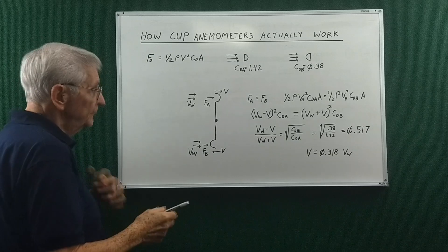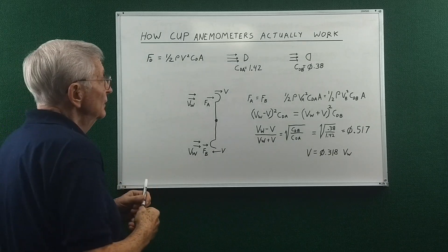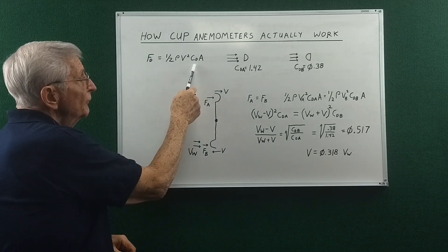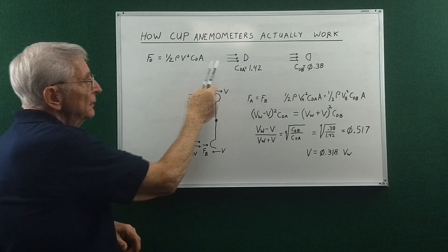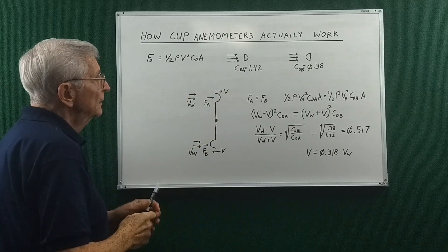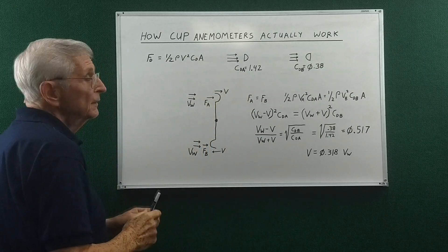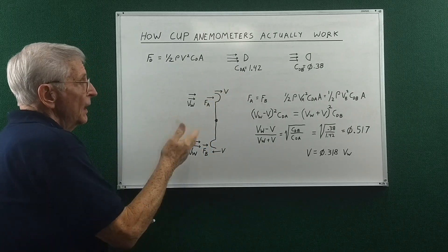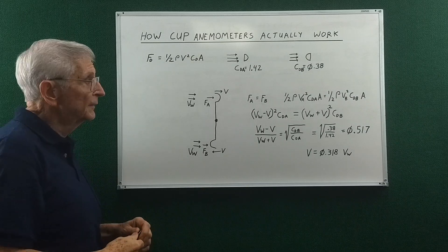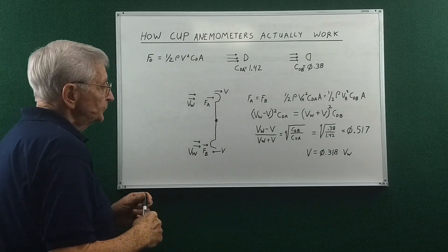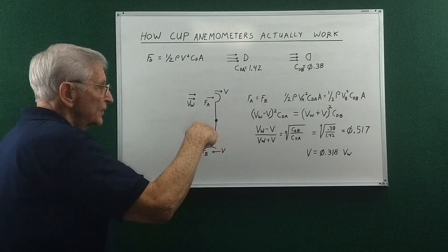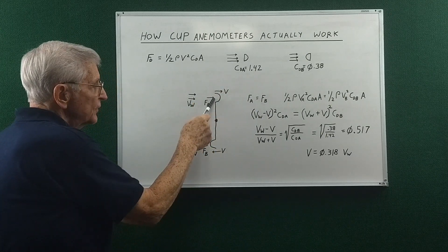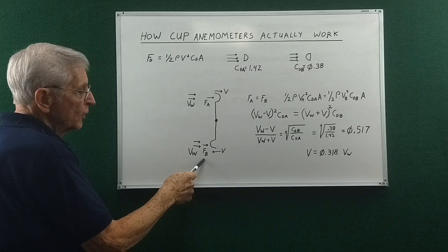So it's not a linear function. Then this is the coefficient of drag, and this is the area of the object, cross-sectional area of the object that the air is acting on. So in order to not have this accelerating, force A has to equal force B.